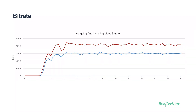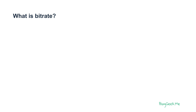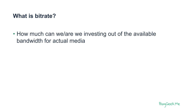In the context of WebRTC and Voice over IP, we need to understand bitrate. Bitrate is essentially how much we're sending and receiving over the network. We usually split that between audio and video. In the graph here, what you see is the incoming and outgoing video bitrate of a session. So what exactly is bitrate? It's how much we are investing out of the available bandwidth for actual media.